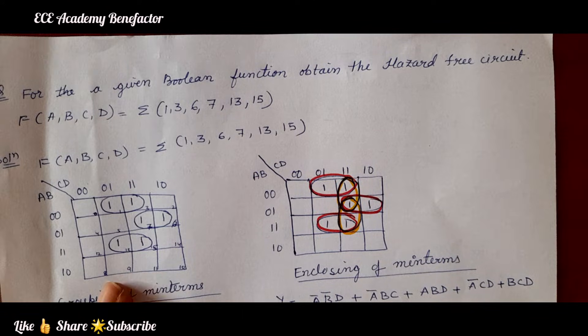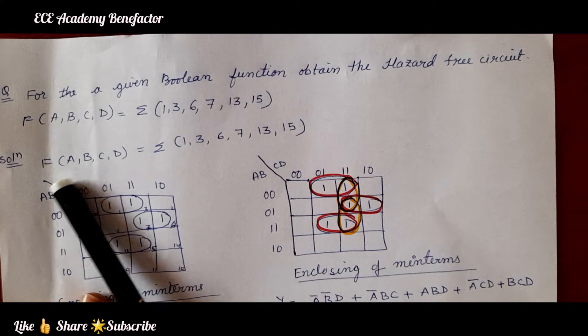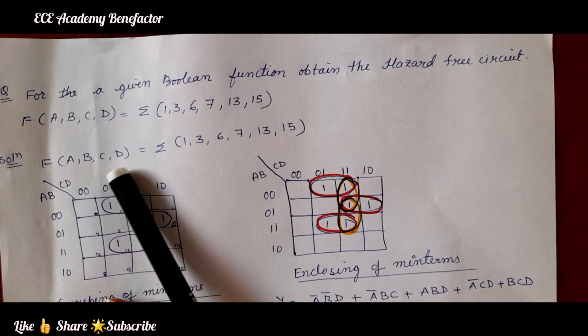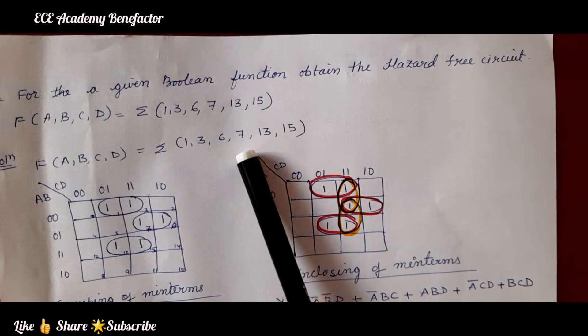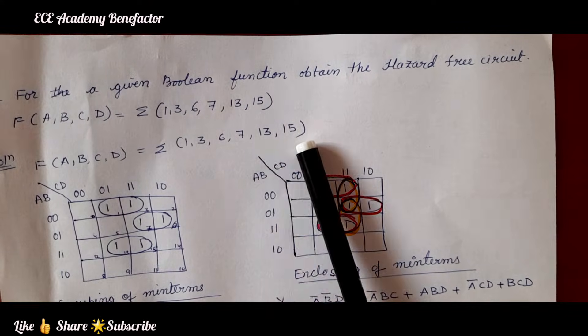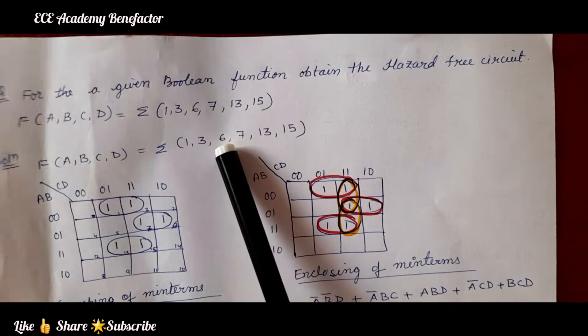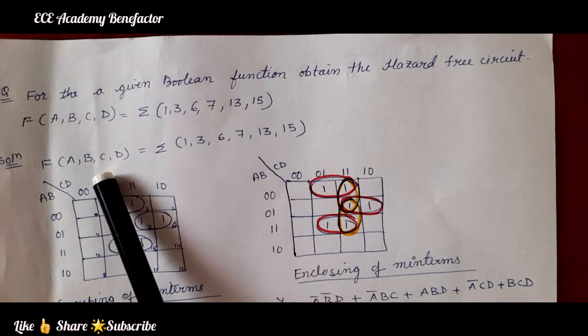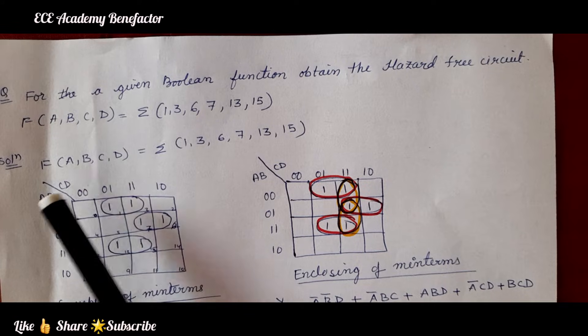Let us start the solution. F(A,B,C,D) = summation of minterms 1, 3, 6, 7, 13, 15. For this Boolean function, it is very clear that we need a 4-variable K-map. So we have drawn a 4-variable K-map.